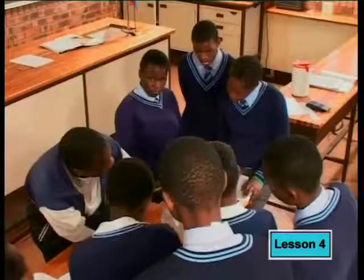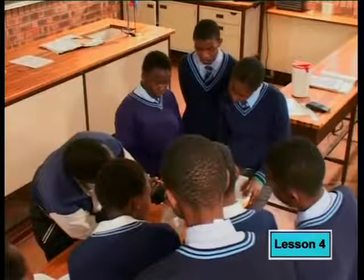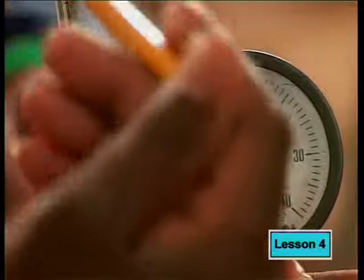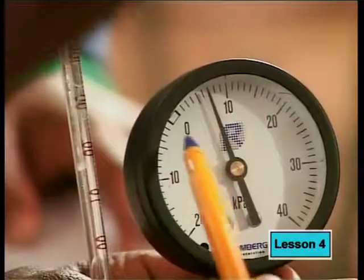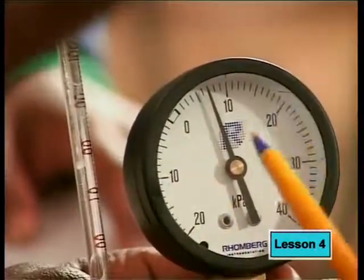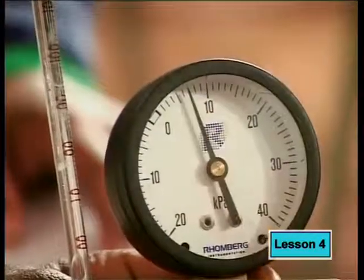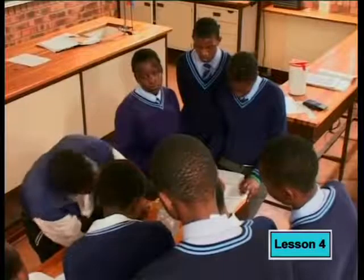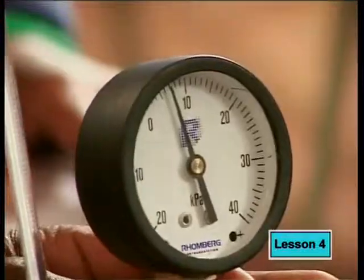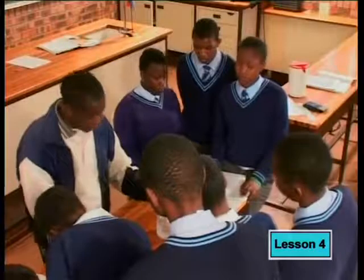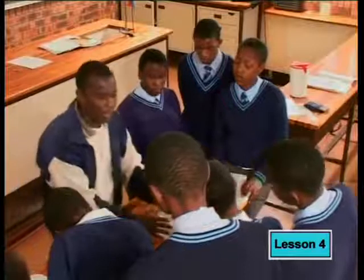Let us look at the pressure reading. The zero mark represents standard pressure of 100 kilopascals, so we simply add the reading we get here to 100 kilopascals. The reading from the pressure gauge is 106.5 kilopascals. We are done with the ice.